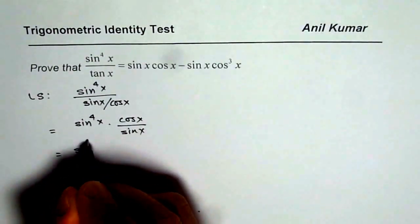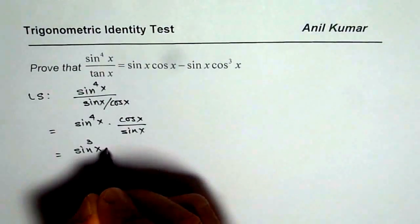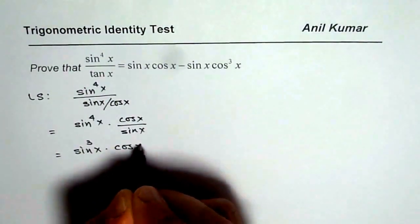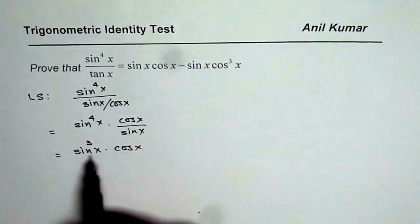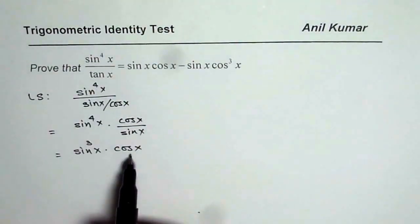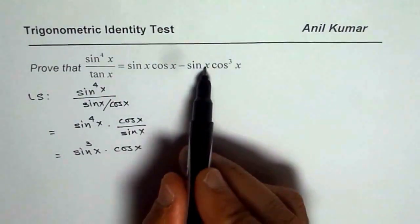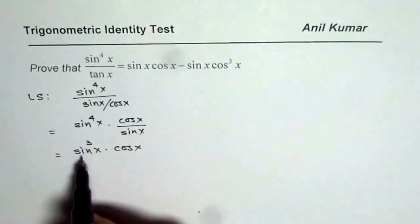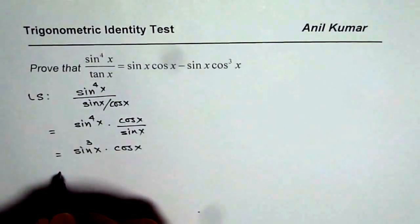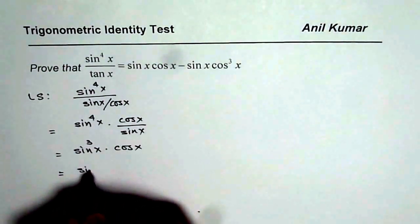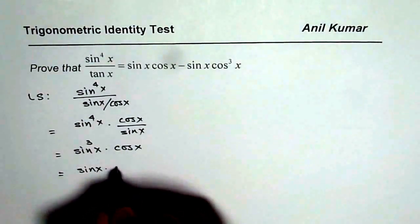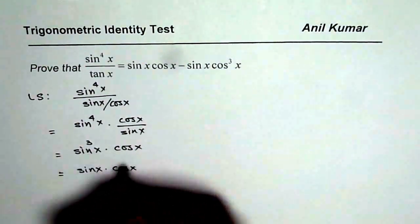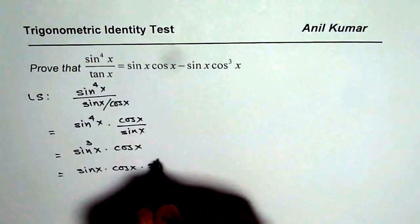So one of these get cancelled, so you get sin cube x times cos x. We have sin cube x times cos x. We do not need sin cube x, we need sin x and sin square x. So what we will do now is we will write this as sin x, we will keep cos x and then sin square x.